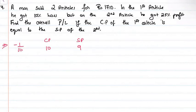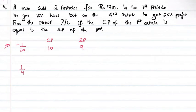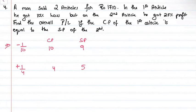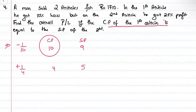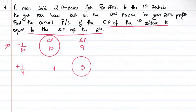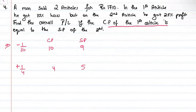For the second article, 25% profit means 1 by 4, so cost price is 4 and selling price is 5. The cost price of the first article equals the selling price of the second article, so we set cost price of first article equal to 10, making selling price of second article also 10. That means cost price of second article is 8.